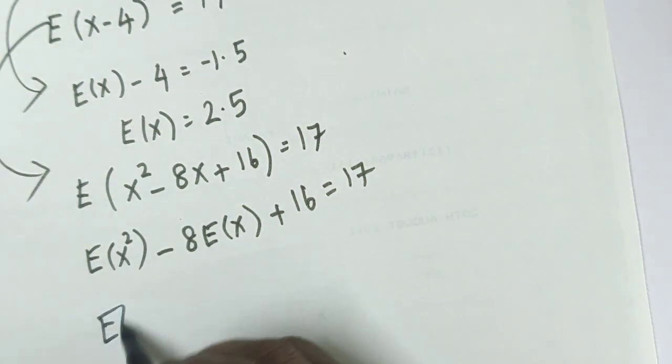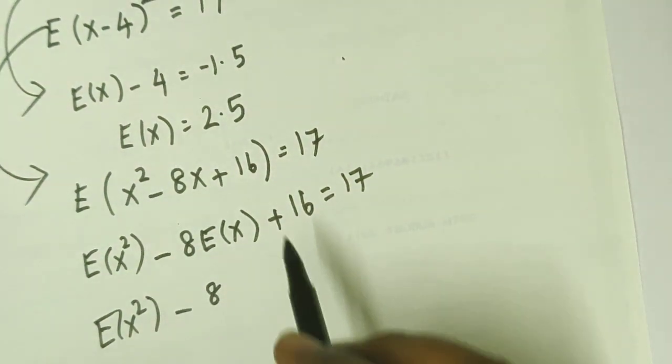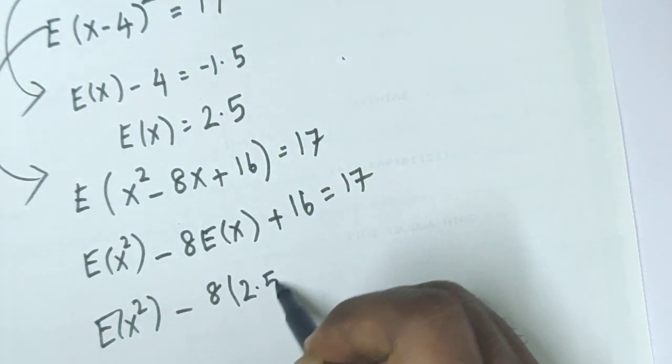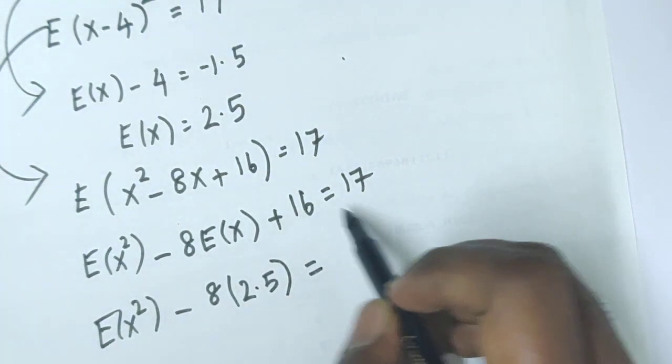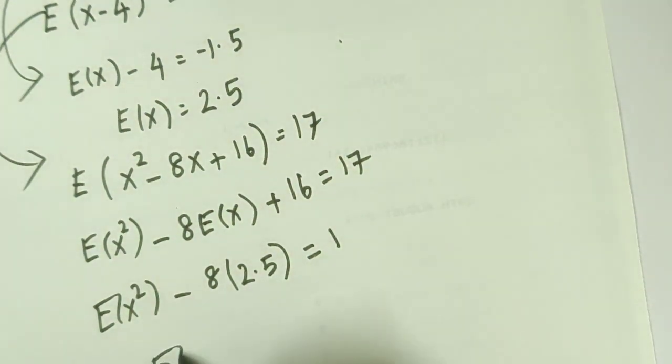E of x square, E of x equals 2.5. E of x square minus 8 into 2.5 equals 1 plus, so minus 8 into 2.5 on the right side.